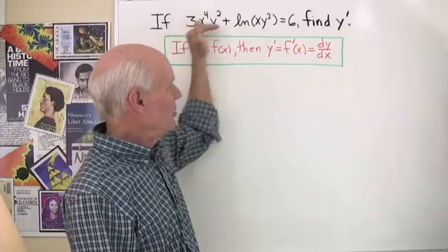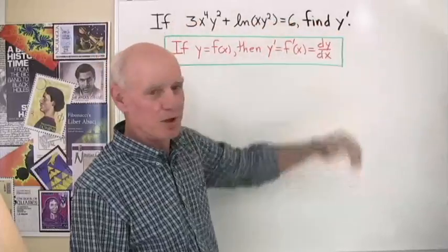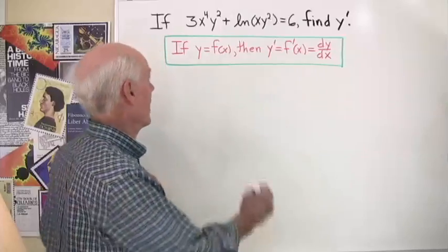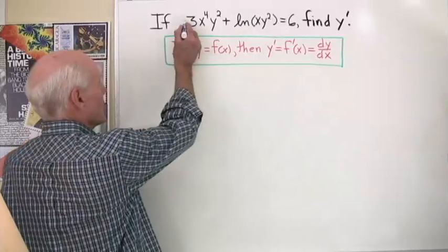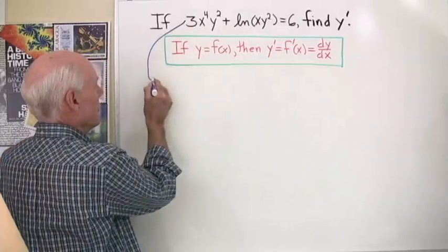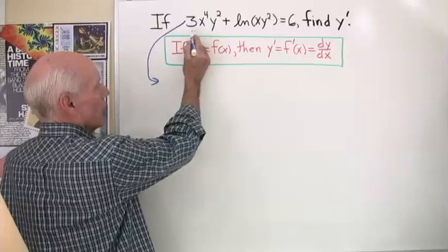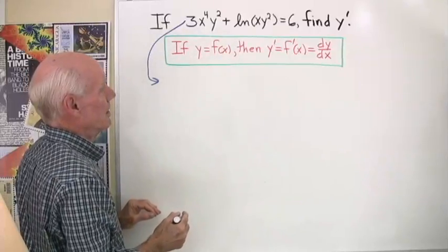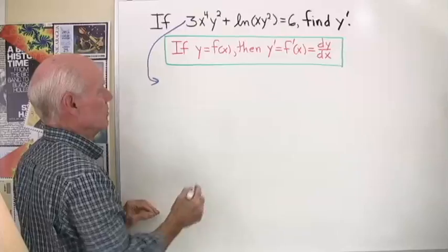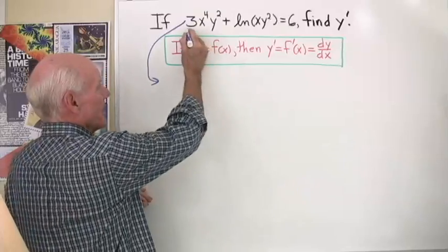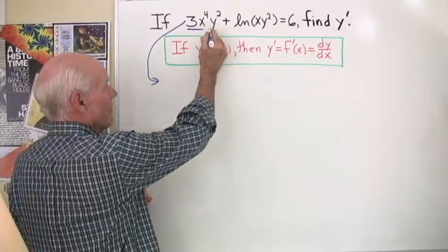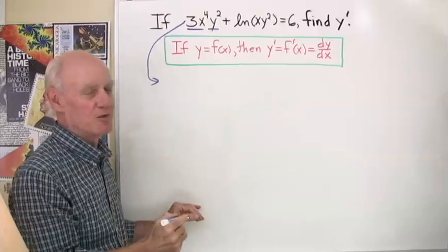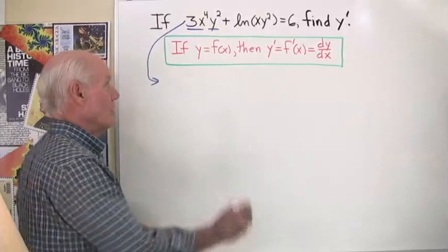So I'm going to use implicit differentiation — I'm just going to differentiate left to right. I'm going to start here and look at this and say that's going to be the product rule, because I have 3x to the fourth times y squared.